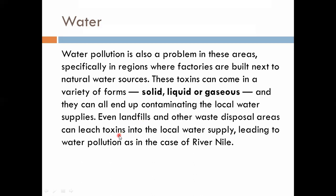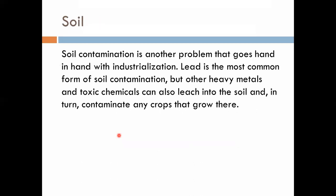This causes water pollution and also causes pollution in the soil. Industries release toxic chemicals and toxic metals in the form of waste, and these materials are exposed to the soil, causing soil contamination. This contamination makes the soil unhealthy and affects what we can grow in it.